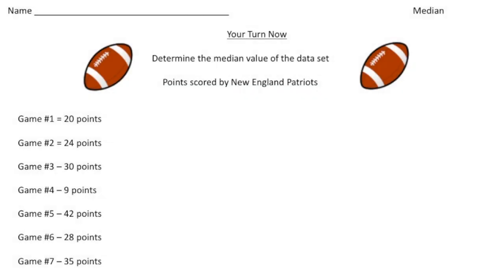All right. Welcome back. Let's see how you did on this practice problem. So here you have to find the median value of the data set. We're talking about the points scored by the New England Patriots. So notice we have seven games. Step number one is to put the numbers in order from least to greatest. So it looks like the smallest number we have is nine. So nine and then followed by 20. And personally, I like to cross them off when I'm done. So nine is done and then 20 is done. And the next number looks like it's 24. So 24. And then we have 28.